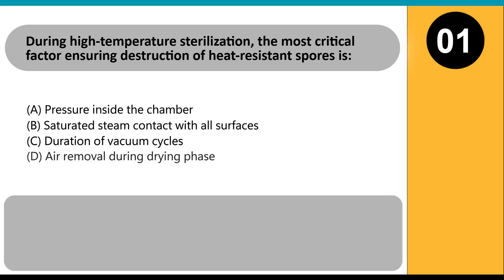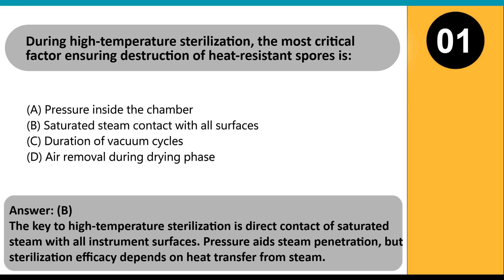During high-temperature sterilization, the most critical factor ensuring destruction of heat-resistant spores is: A. Pressure inside the chamber. B. Saturated steam contact with all surfaces. C. Duration of vacuum cycles. D. Air removal during drying phase. Answer: B. The key to high-temperature sterilization is direct contact of saturated steam with all instrument surfaces. Pressure aids steam penetration, but sterilization efficacy depends on heat transfer from steam.